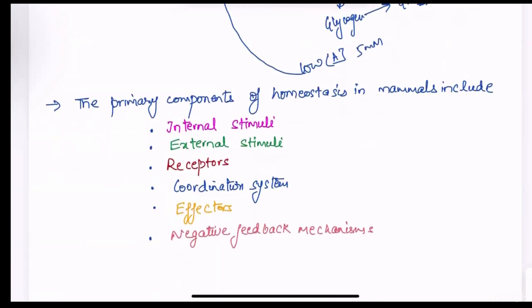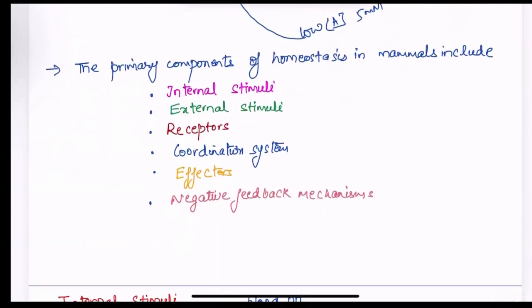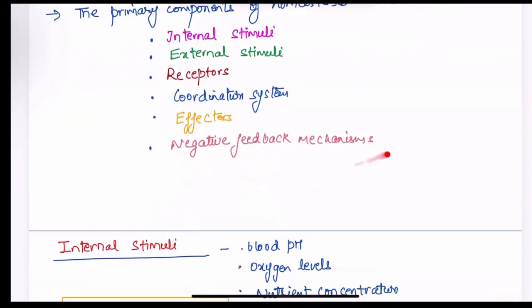The primary components of homeostasis in mammals include internal stimuli, external stimuli, receptors, coordination system, effectors and negative feedback mechanisms.